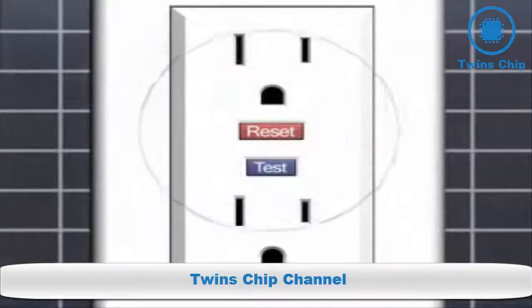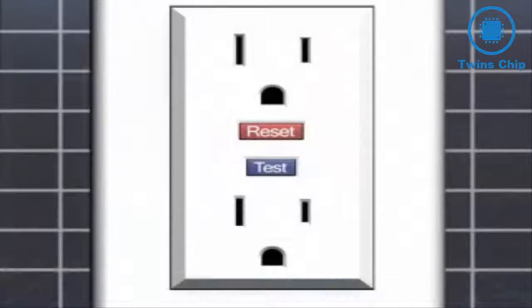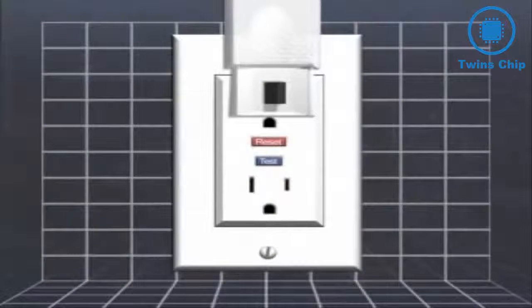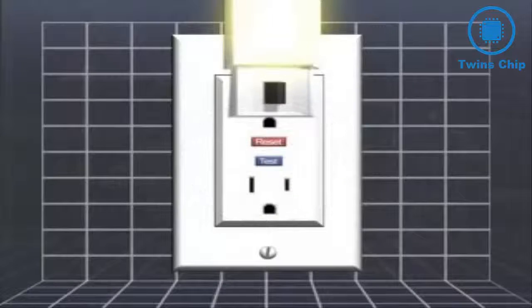Push the reset button on the GFCI to prepare for testing. Plug a nightlight or similar electrical device into the receptacle. The light should turn on. Push the test button. The nightlight should go off.